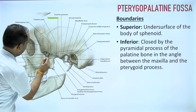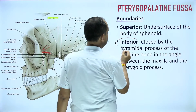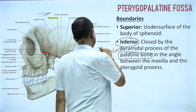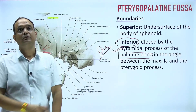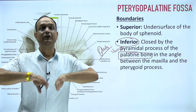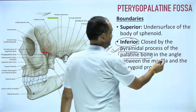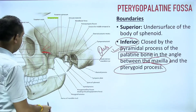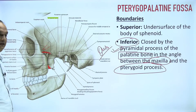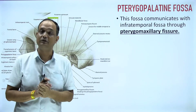The superior boundary is formed by the sphenoid bone. The inferior boundary is again important — it is formed by the pyramidal process of the palatine bone. This question has been asked many times: the pyramidal process of the palatine bone forms the inferior boundary of the pterygopalatine fossa. So the palatine bone contributes two walls: medially the perpendicular plate, and inferiorly the pyramidal process, which lies between the maxilla anteriorly and the pterygoid process posteriorly, closing the fossa from below.